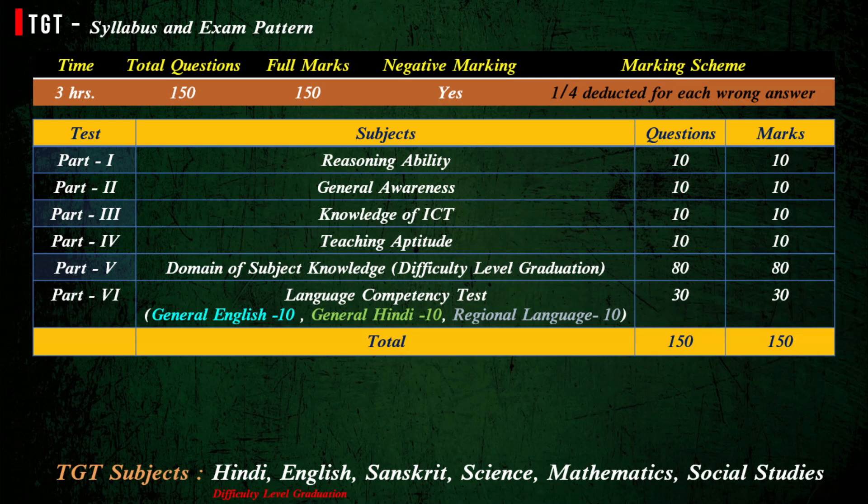The paper is divided into 6 sections: Reasoning Ability, General Awareness, Knowledge of ICT, Teaching Aptitude, Domain of Subject Knowledge, and Language Competency Test, where you have to read General English, General Hindi, and Regional Language.